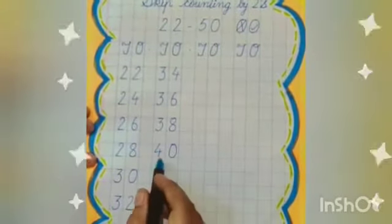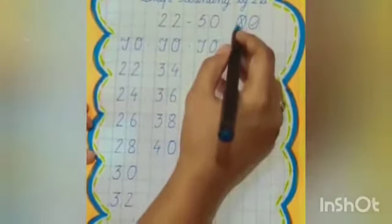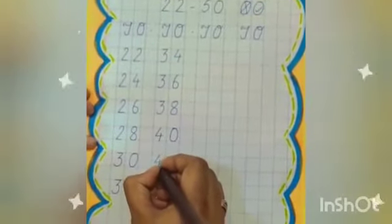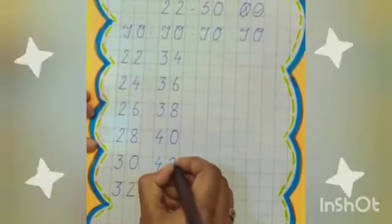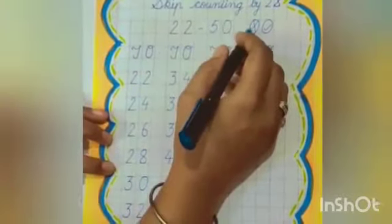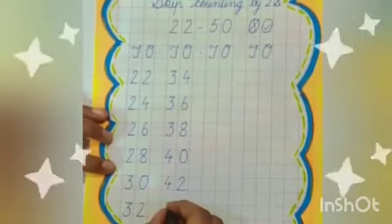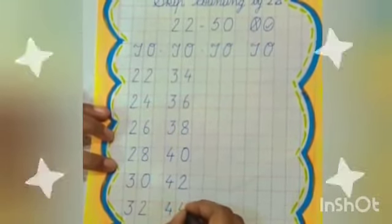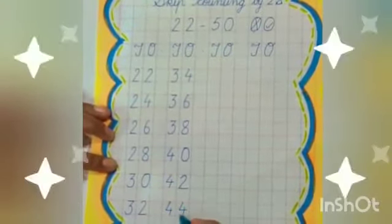Next is 40, 41, 42. Next is 42, 43, 44. Let's count: 44.